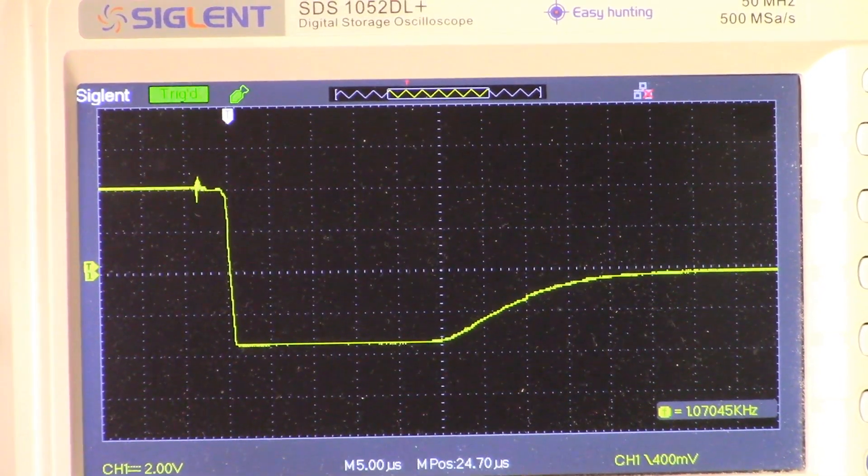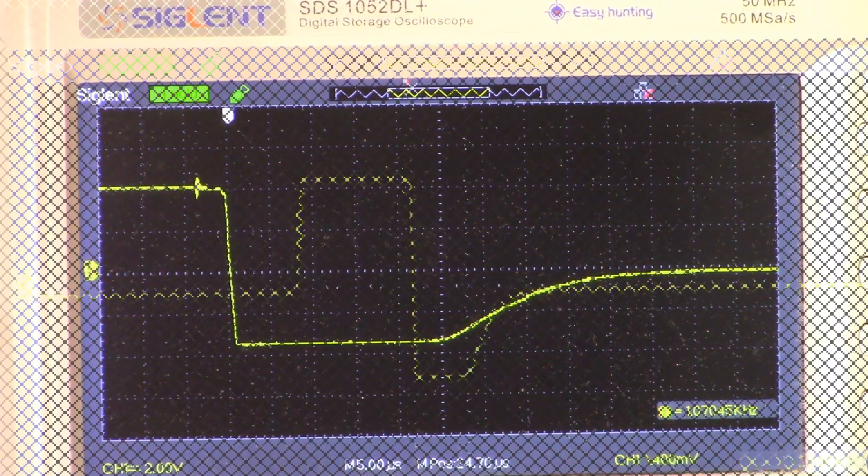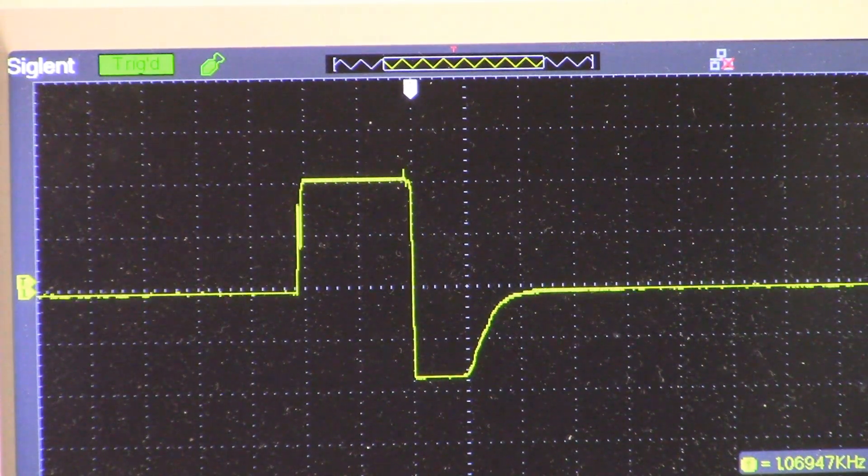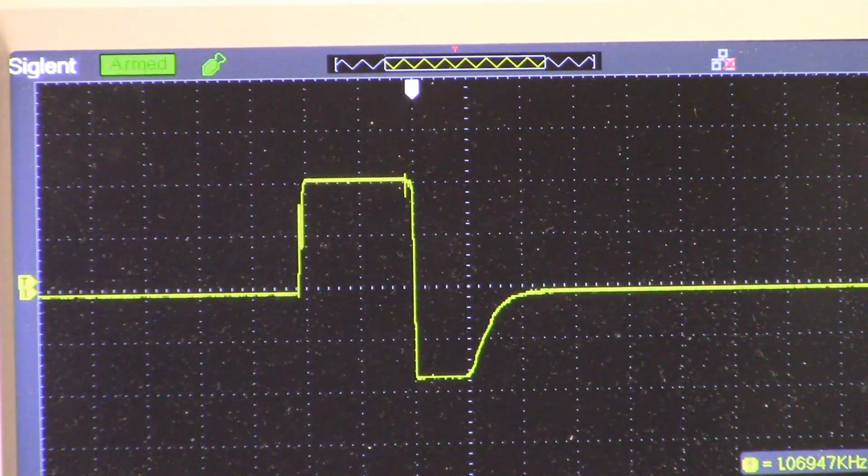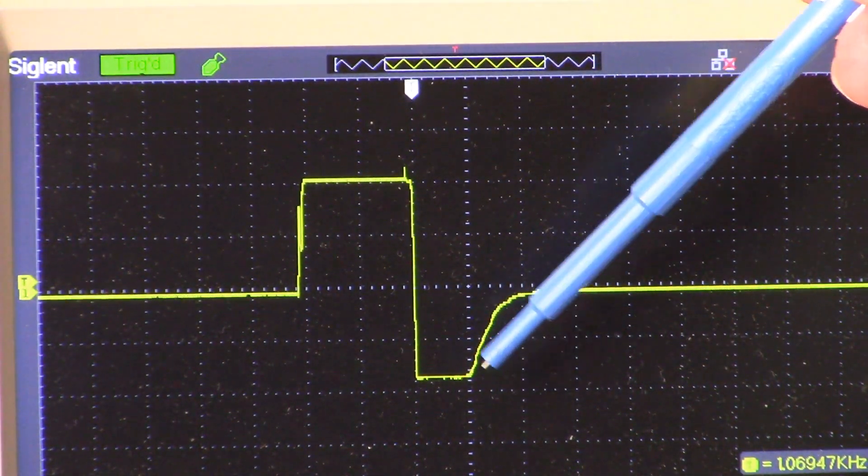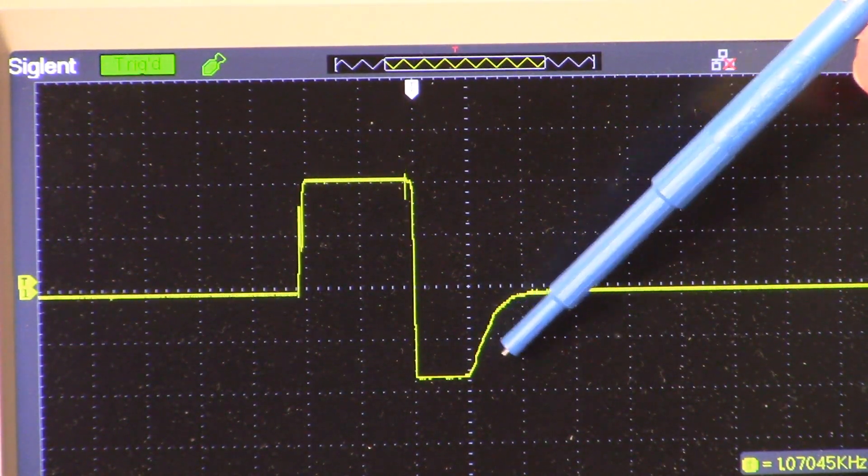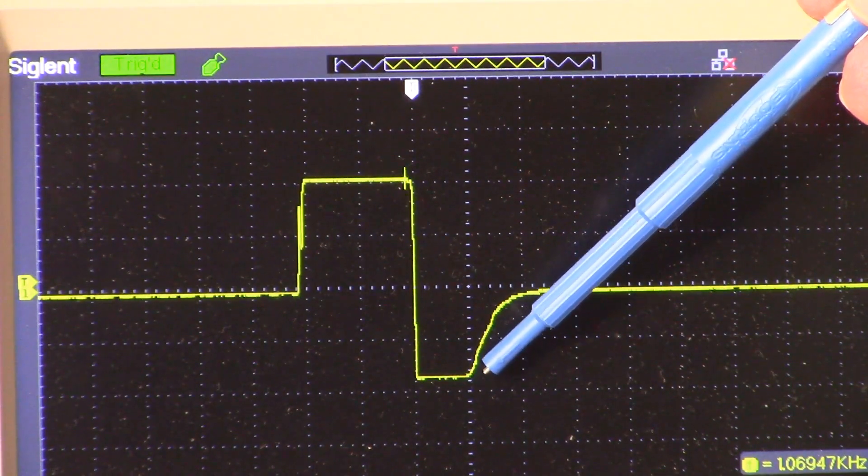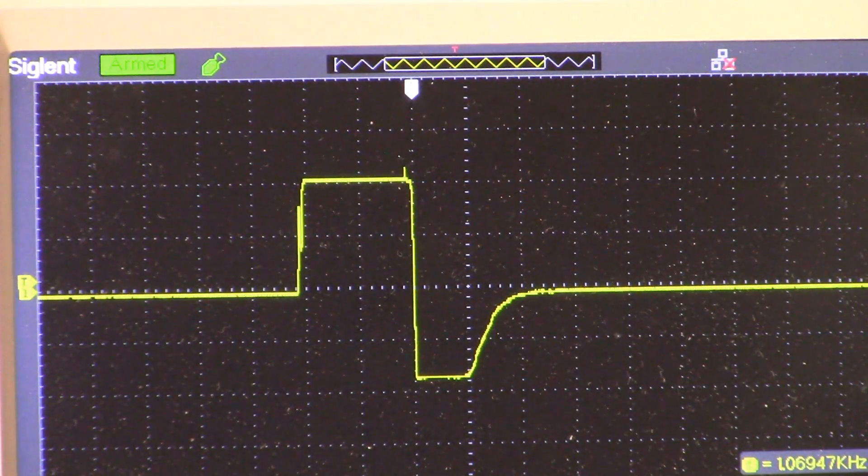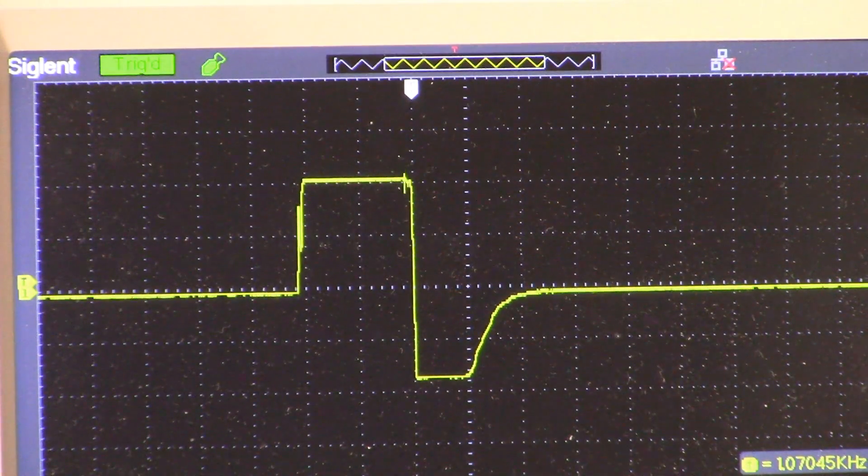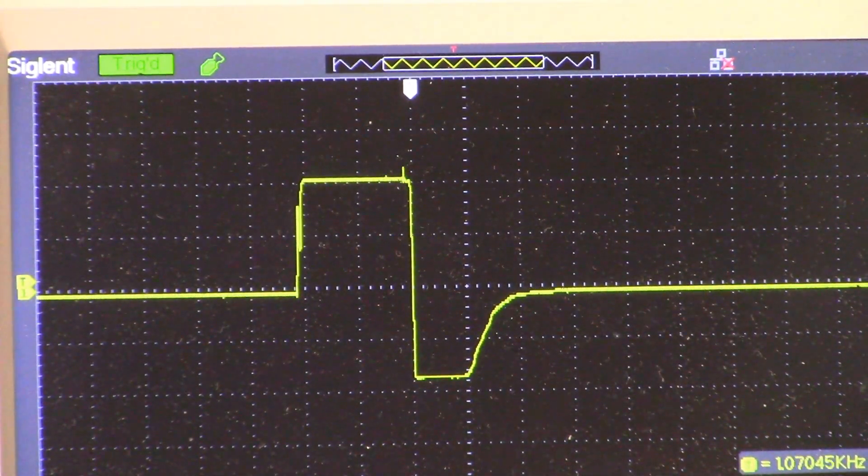All right, on to the next part of the project. Just one more shot of the preamp signal here—you can see we're just about 25 microseconds until we come up out of saturation. Now, the coil that I'm using is not a particularly fast coil.